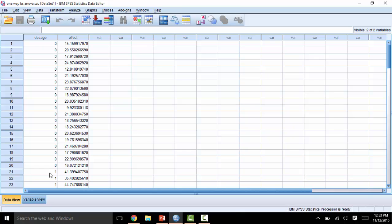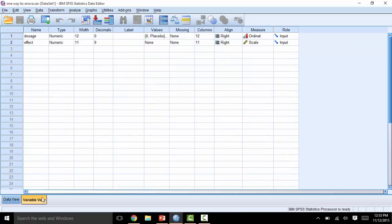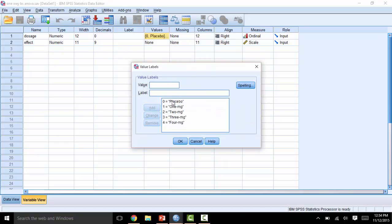It is important that the variable is set up in this manner, and this can be done by switching over to Variable View. Be sure that the type of variable is set up as numeric. And feel free to add in your coding by clicking on the dots over here in the Values column. Here you can see I've coded zero for placebo, one for one milligram, so on and so forth.